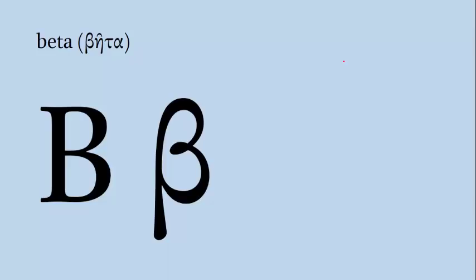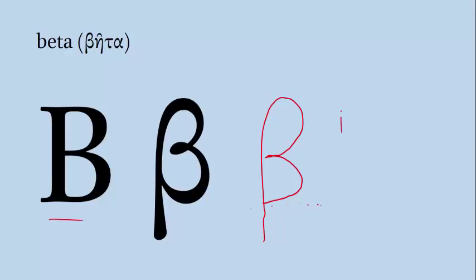Our second letter is called Beta, which corresponds roughly to the English letter B and makes a B sound as in 'ball.' To draw a Beta, the uppercase is just the same as an uppercase B. For a lowercase Beta, I start down below the line, come all the way up to the top, loop around once, loop around again, and make sure you leave this tail down below the line. An example of a Greek word with Beta is the verb 'blepo,' which means 'I look.'